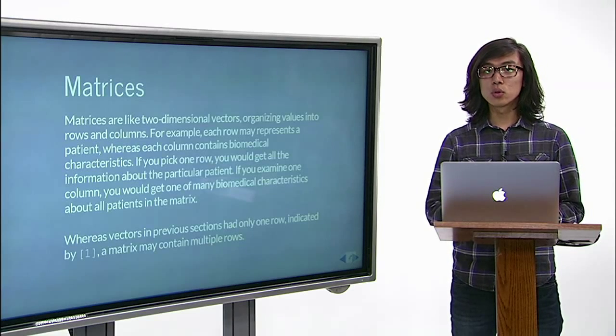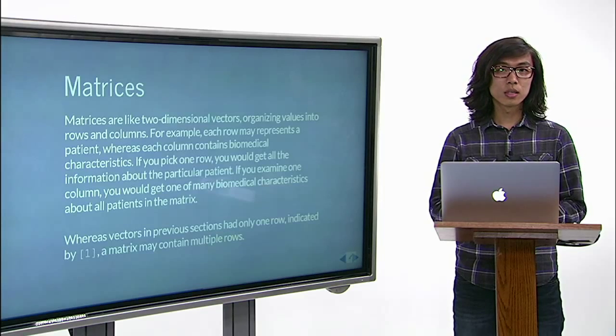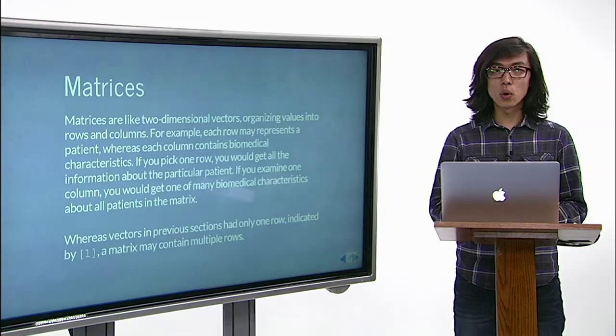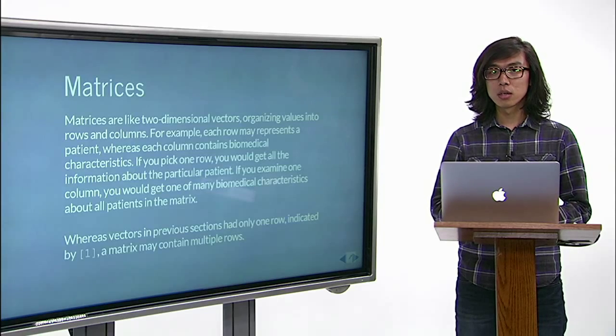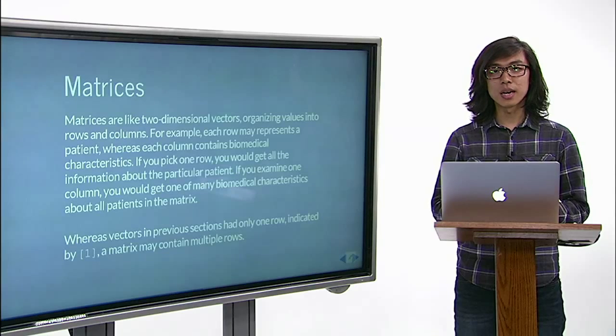Matrices are like two-dimensional vectors, organizing values into rows and columns. For example, each row may represent a patient, whereas each column contains biomedical characteristics.